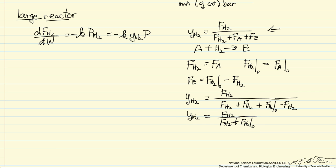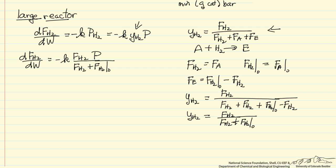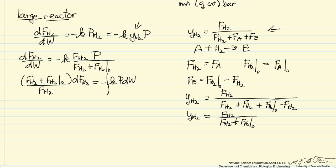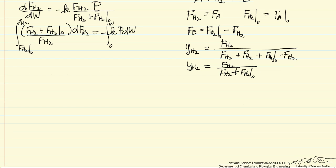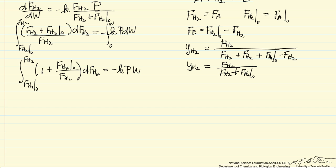I'm going to substitute back into my mass balance for the mole fraction of hydrogen, and then solve this differential equation analytically. To solve this equation, I separate variables and put the terms of the flow rate of hydrogen on the left side. Then I integrate from W equals zero up to any point in the reactor, and from the flow rate of hydrogen at the inlet to the flow rate of hydrogen at any point. Since k and pressure are constants, the right side integrates directly.